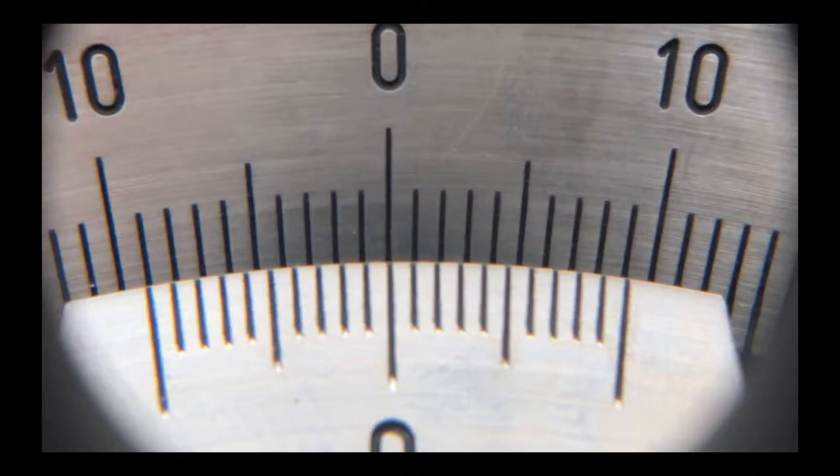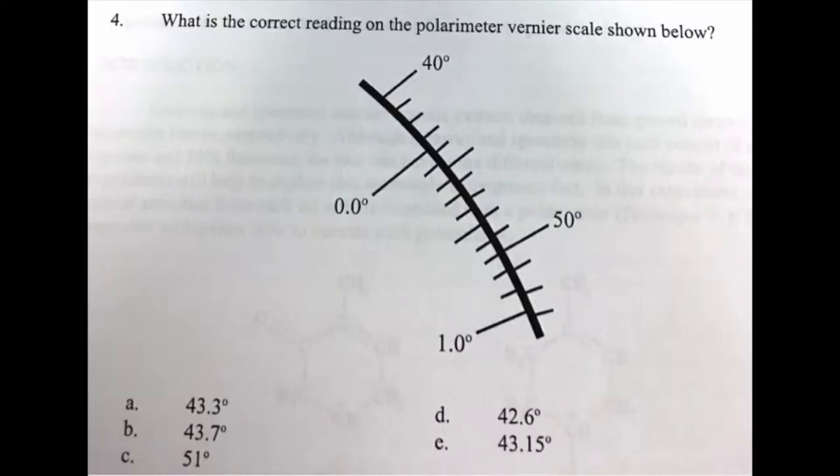In the case of the polarimeters in lab, the scales are circular and read to the tenth of a degree. Here's an example.